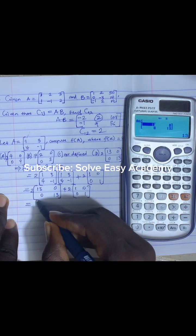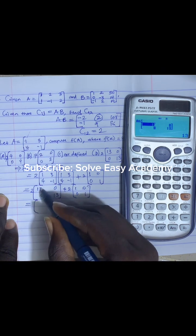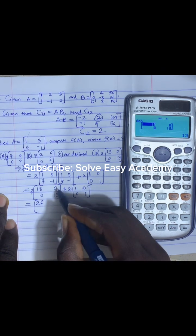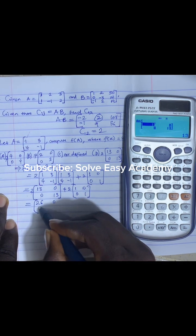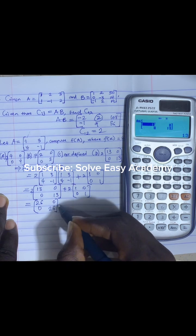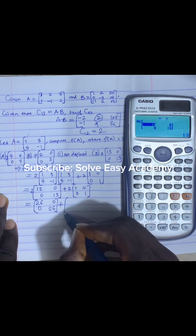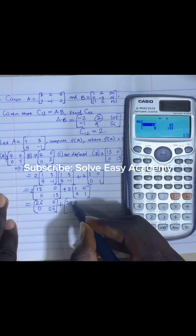So we have 2 times 13 is 26, 2 times 0 is 0, 2 times 0 is 0, 2 times 13 is 26, plus 2 times 1 is 2, 2 times 0 is 0, 2 times 0 is 0, 2 times 1 is 2.